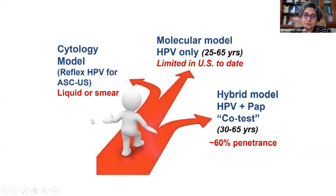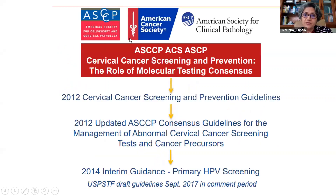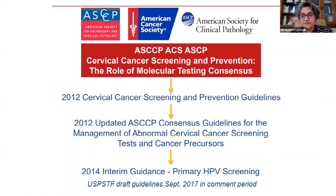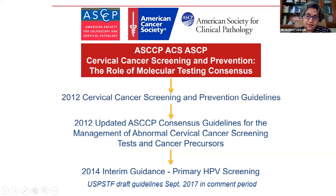The pathways, as Dr. Kusum has very well shown us, are the cytology model. You have the molecular model where you have only the HPV testing, and then you have the hybrid model where you have the co-test. We know that there are societies which are laying down guidelines for screening and prevention, and we have our own FOGC which has given really good guidelines. The guidelines have been changing over time, and they have evolved from cytology to HPV testing.